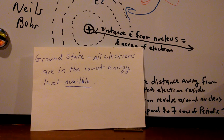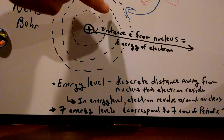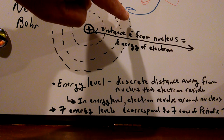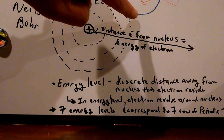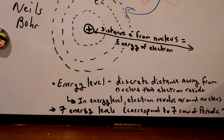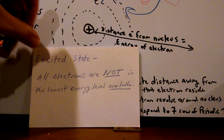The ground state is when all electrons are in the lowest energy level available — meaning they're all not necessarily in the first energy level, as there are rules for how many electrons go to how many energy levels. Once the atom absorbs exactly the amount of energy corresponding to the distance from the lower energy level to a higher energy level, the electron is promoted to the higher energy level.